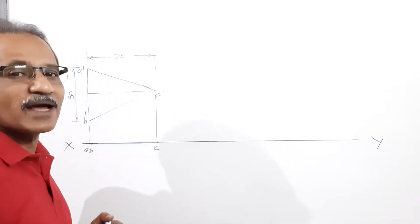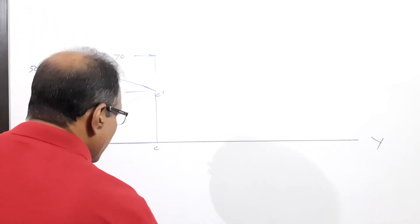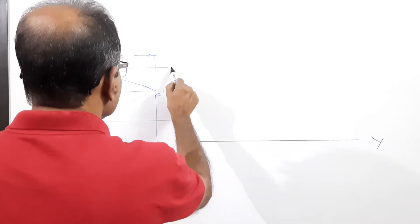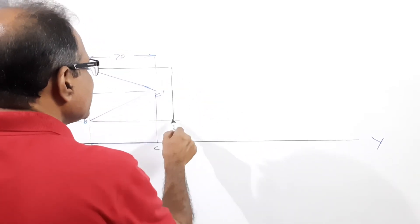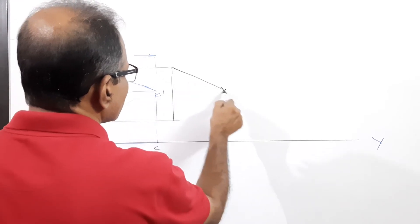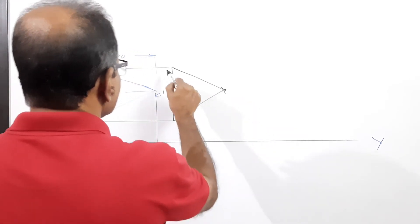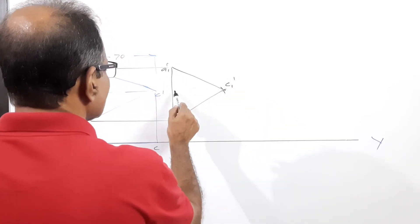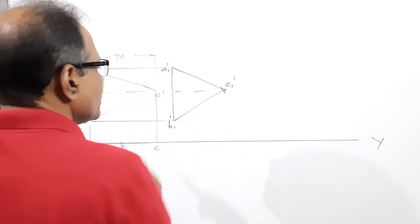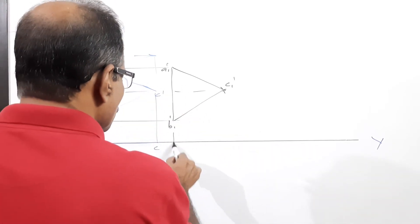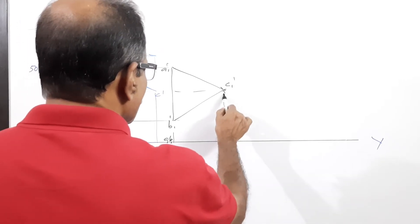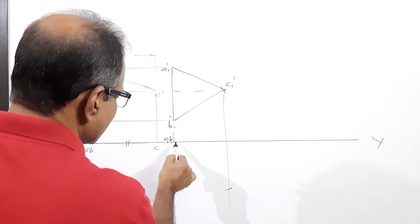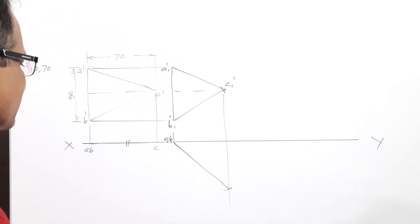So what you do is: draw horizontal lines through the base, fix the base, take the leg length in your compass, and construct an equilateral triangle a1-dash, b1-dash, c1-dash. You have constructed an equilateral triangle. Then project it down — you get a1, b1 — and cut the plan length.